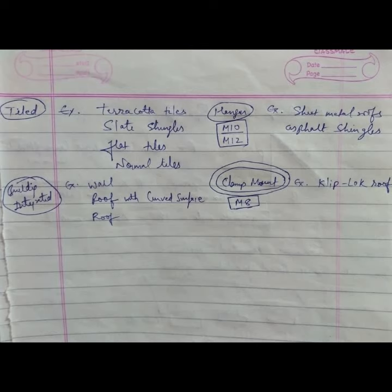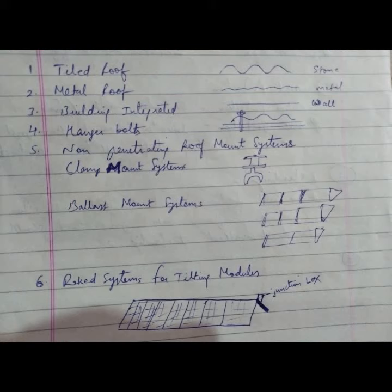Ballast mount systems - ballast mount systems are installed on the roof side. You see in this diagram, the mount system.